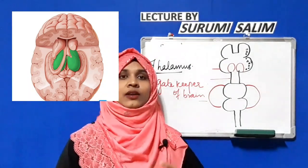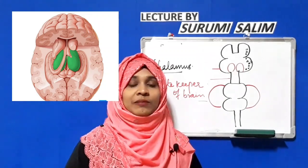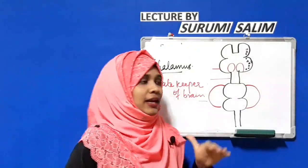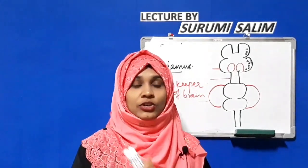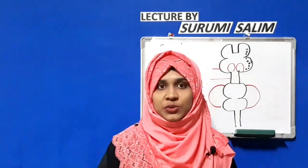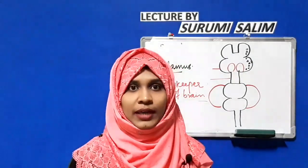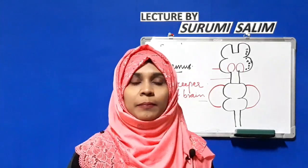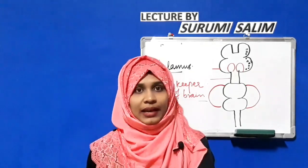Behind the thalamus is the hypothalamus. The hypothalamus maintains the homeostasis of the body with the help of the endocrine system, and is called the king of endocrine glands. Its major functions include responding to stressful and fearful situations, maintaining body temperature (thermoregulation), and maintaining water balance in the body.